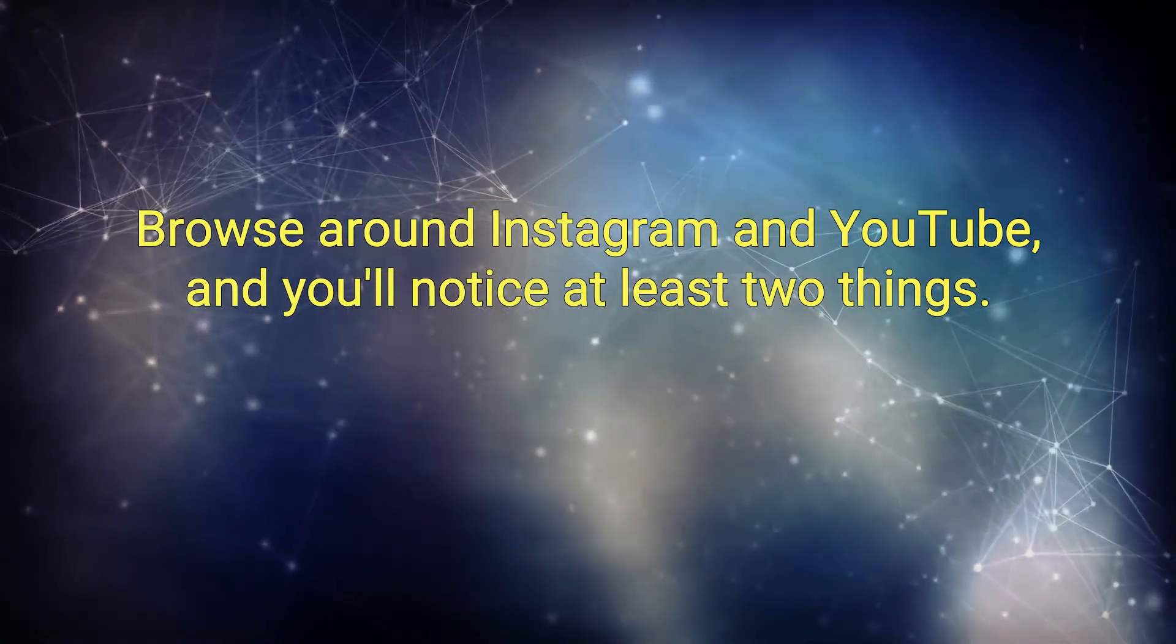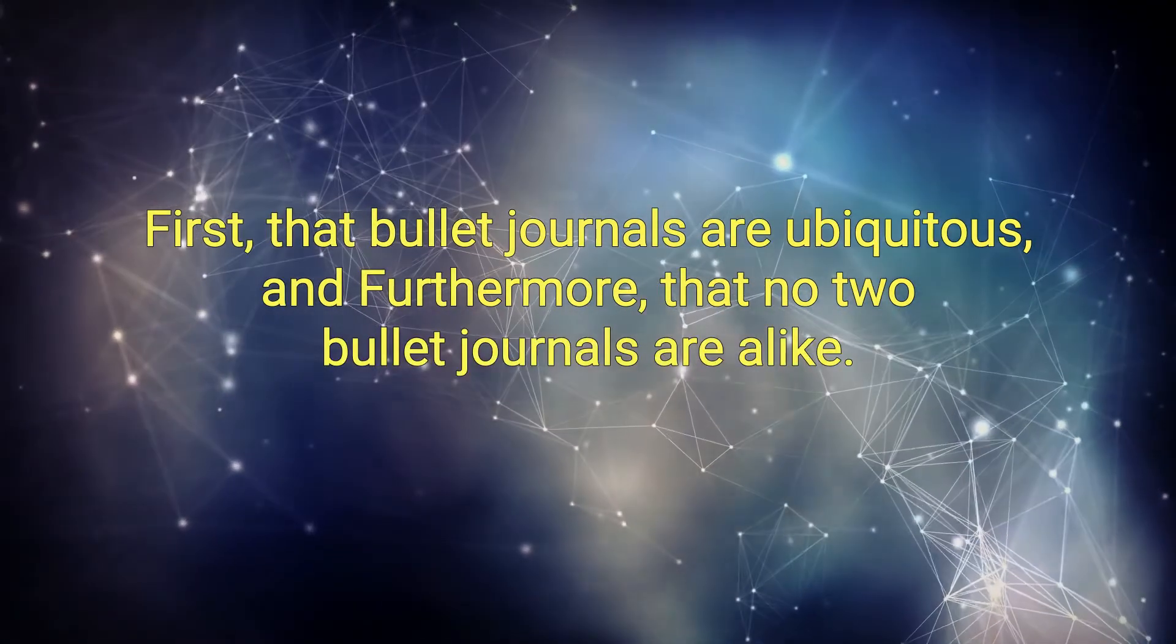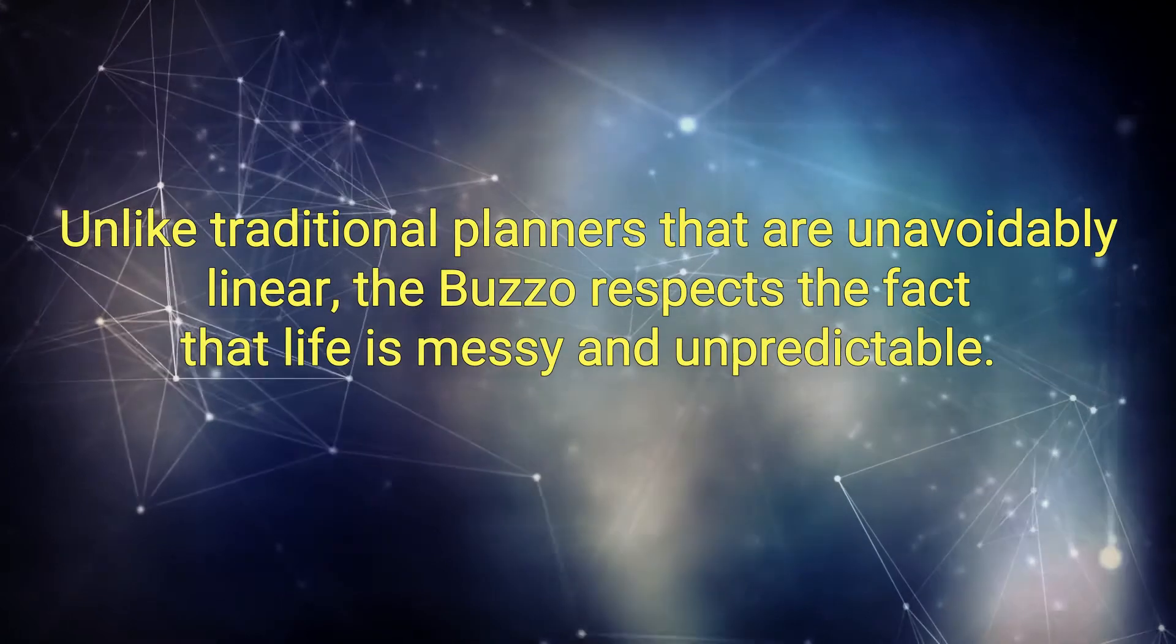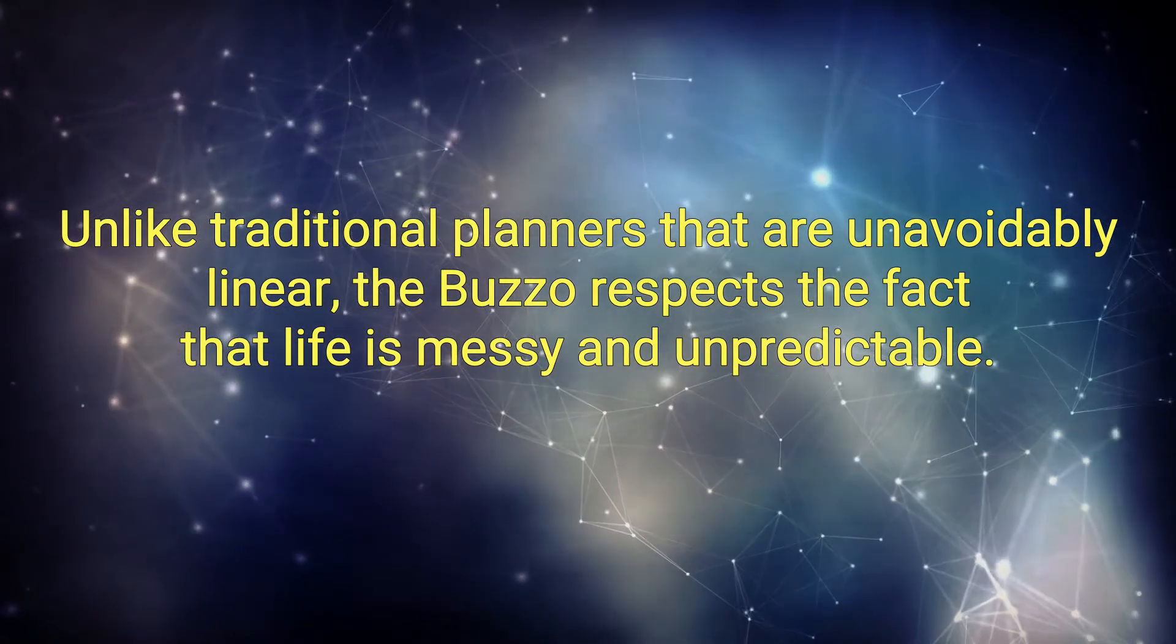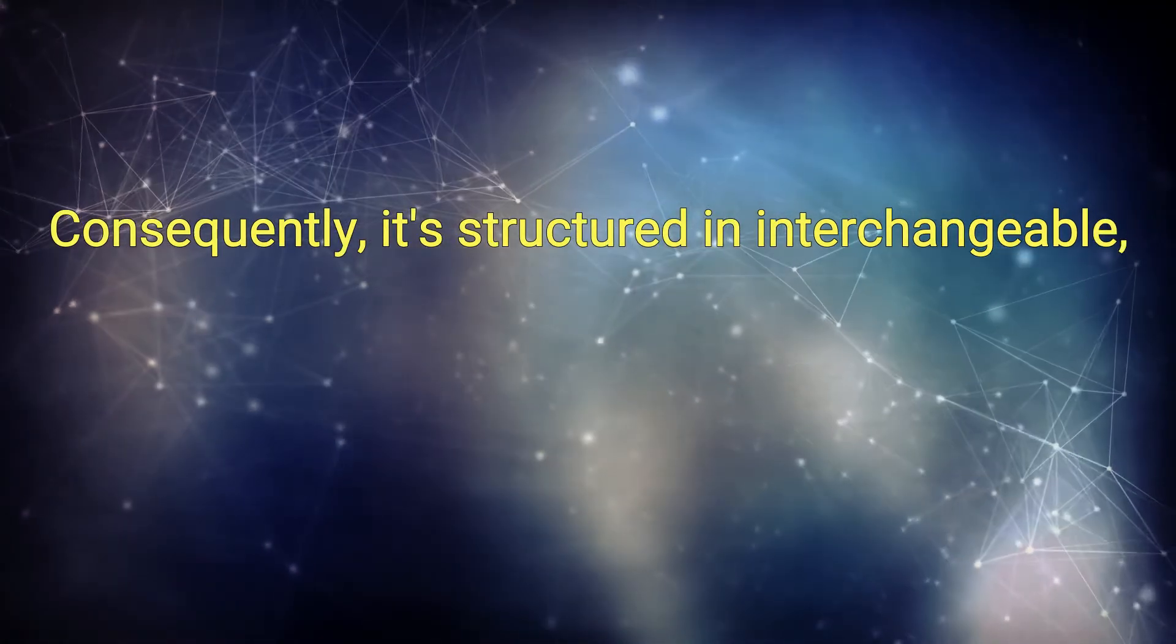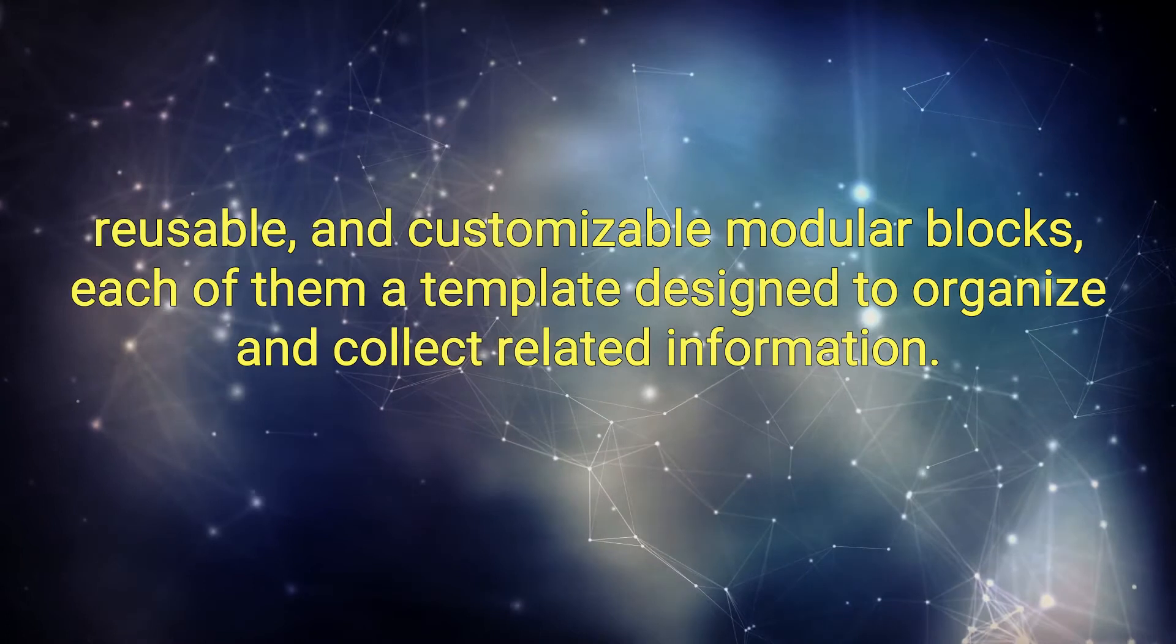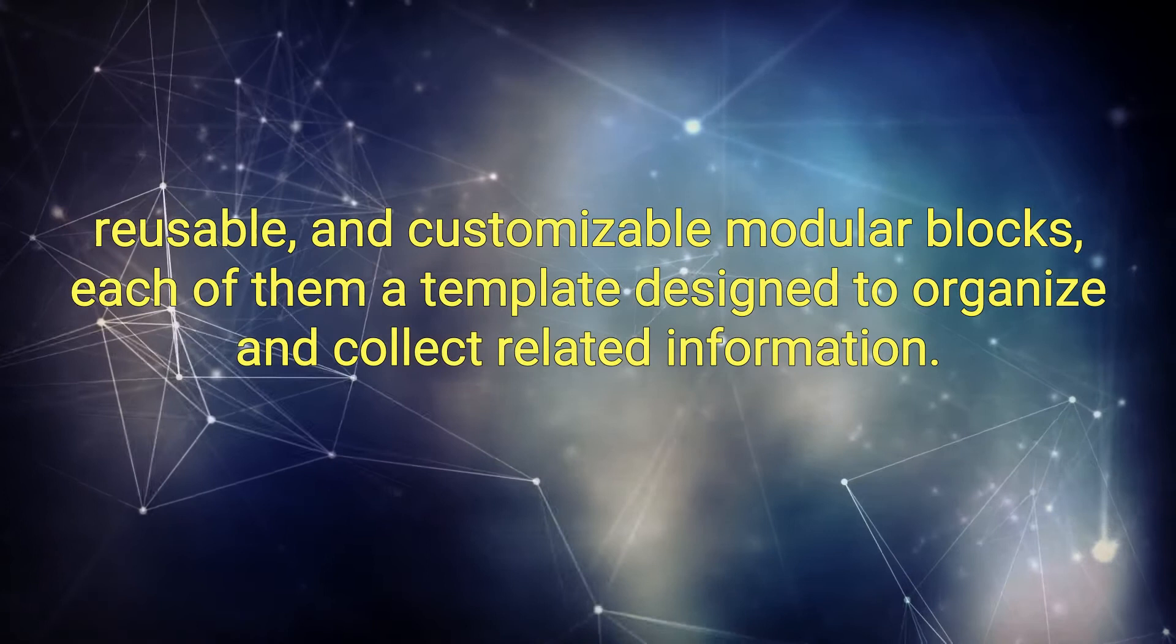Browse around Instagram and YouTube and you'll notice at least two things. First, that Bullet Journals are ubiquitous, and furthermore, that no two Bullet Journals are alike. Unlike traditional planners that are unavoidably linear, the Bujo respects the fact that life is messy and unpredictable. Consequently, it's structured in interchangeable, reusable, and customizable modular blocks, each of them a template designed to organize and collect related information.